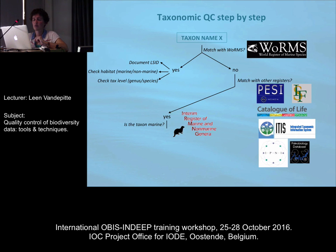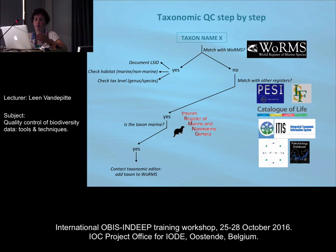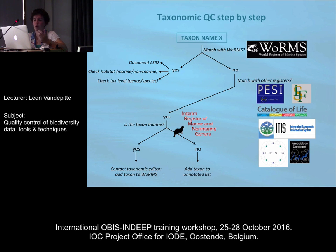Another system that you can use for that is ERMS — the Interim Register of Marine and Non-Marine Genera — which is a very, very complete register of all genera ever described; it's 95% complete. It used to be managed and hosted by Tony Rees at CSIRO. Since a little bit over a year, it's hosted here at VLIZ, so we are also maintaining that register. If you find in ERMS that it is marine, you can contact us and we will contact the taxonomic editor, because that is definitely then a name that is missing from WoRMS. If it's not marine, within OBIS we add it to an annotated list saying this is not marine, it's freshwater, it's terrestrial, whatever.